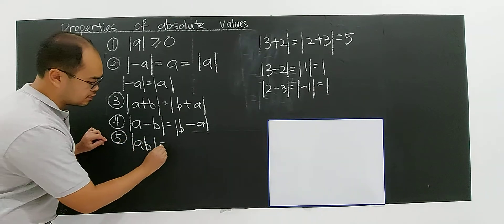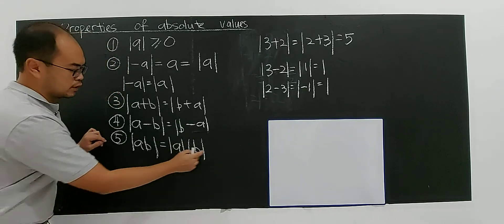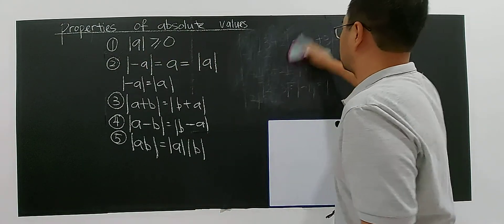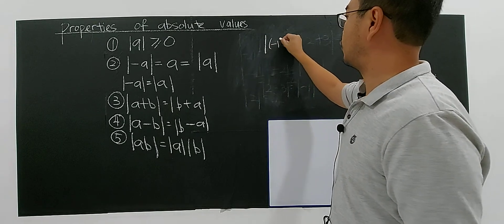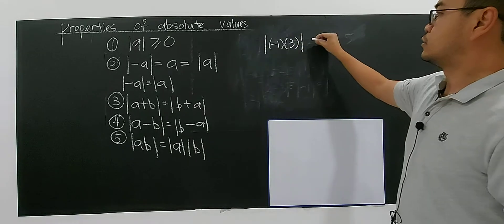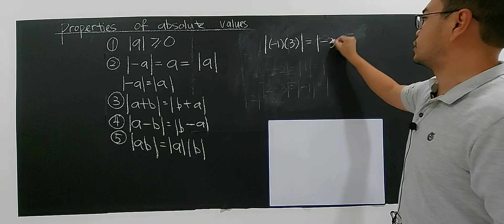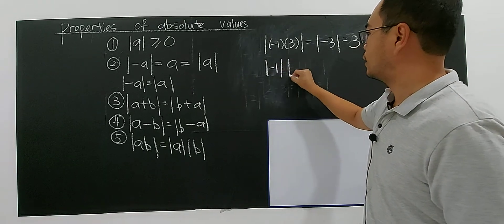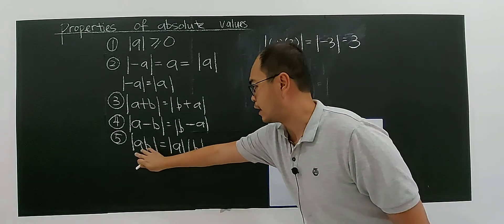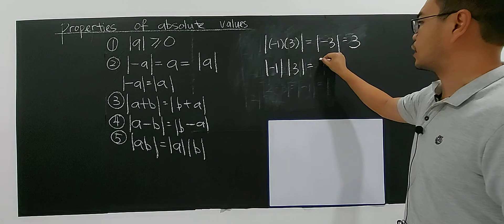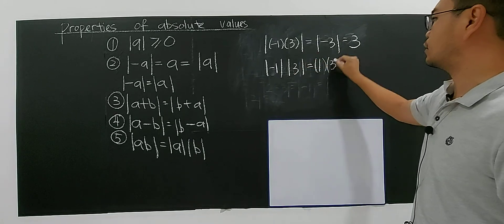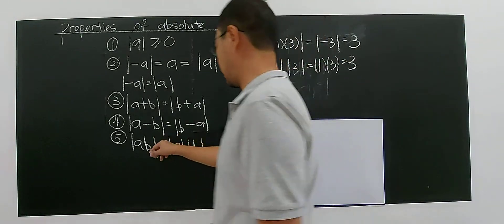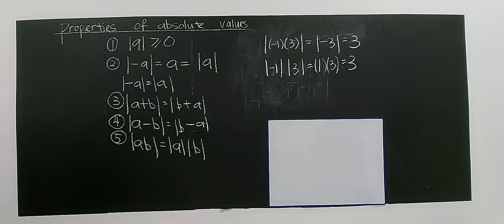The fifth property: the modulus of a product a times b equals the product of the individual moduli. For example, modulus of negative one times three — you first get negative three, whose modulus is three. Separately, modulus of negative one is one and modulus of three is three, and one times three is still three. So |ab| = |a| · |b|.